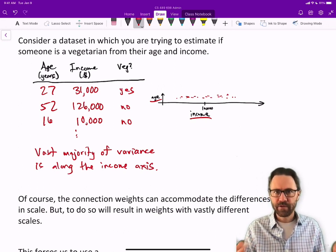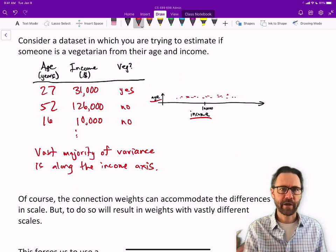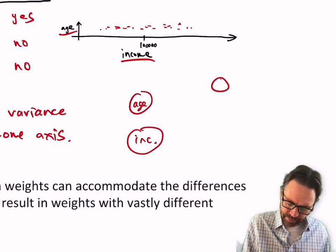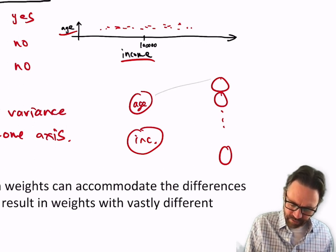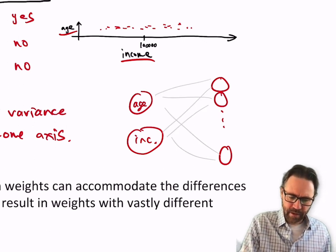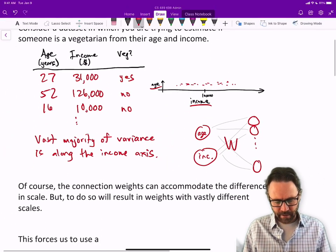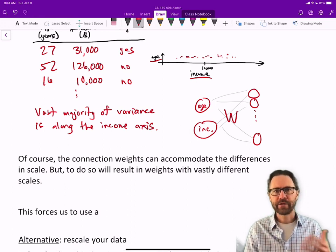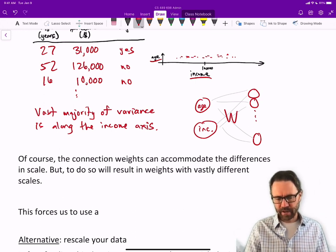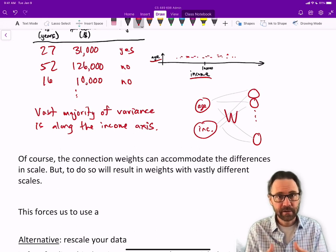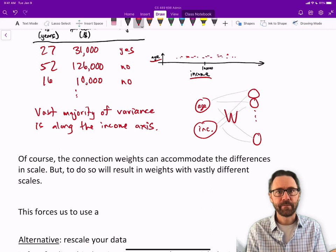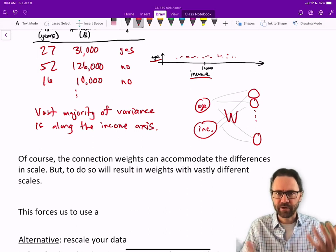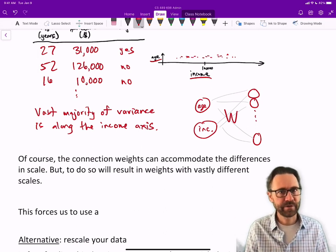If we have those two inputs to a neural network—age and income—as inputs to some neural network with a bunch of nodes in the hidden layer and connections with weights W, the weights can accommodate a rescaling of that data. The weights coming from income would have to be really small and the weights coming from age would have to be quite a bit bigger to bring both input features to a similar scale so you can mix them in the hidden layer.